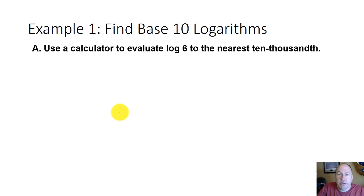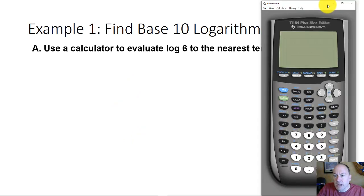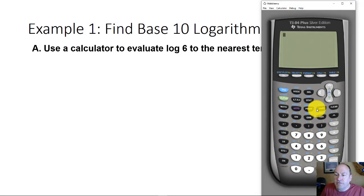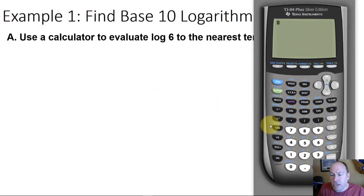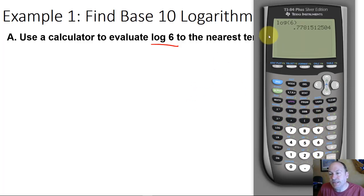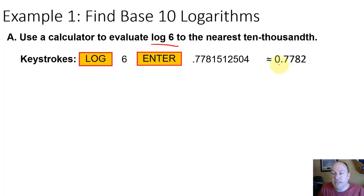Let's use our calculator to evaluate logarithms. To evaluate a logarithm we use the log button, which is this button right here next to the 7 — it is a base of 10. So to evaluate the log of 6, we simply type log 6 and hit enter. The log of 6 is approximately 0.7782 to the nearest ten-thousandth.